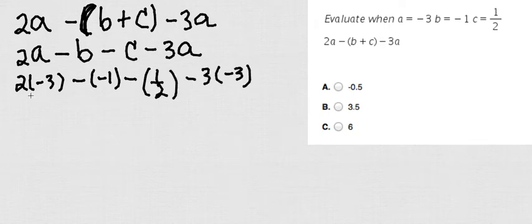minus 3 times negative 3. Now I can go ahead and do 2 times negative 3 is negative 6. Negative times negative is plus 1, minus 1 half. Negative 3 times negative 3 is going to be equals to 9.